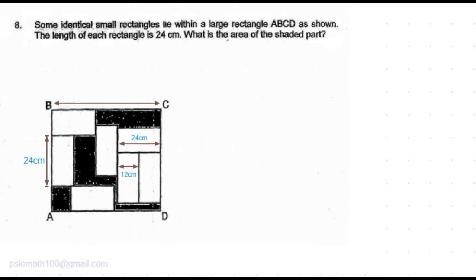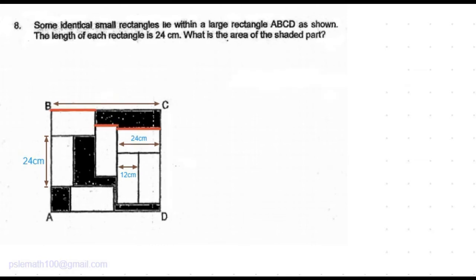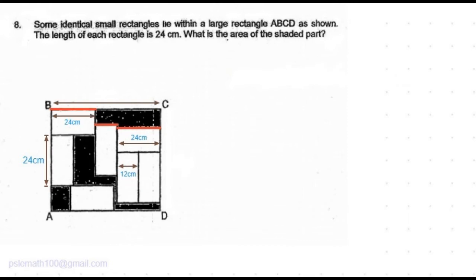Now let's find the length of the larger rectangle. The larger rectangle's length is equal to the sum of the line segments marked in red. One segment is 24 centimeters, another is 24 centimeters, and then one width of the smaller rectangle which is 12 centimeters. The sum of these three lengths gives us the length of the larger rectangle: 60 centimeters.